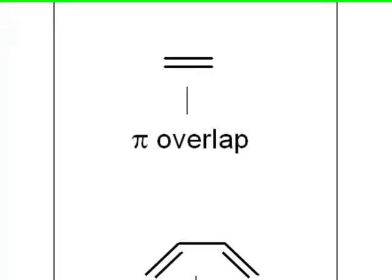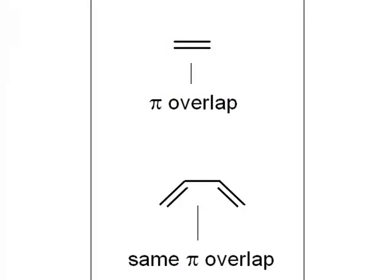The principle of conjugation is that there can be situations where there is pi overlap, but you don't see it visually prompted in the structures.